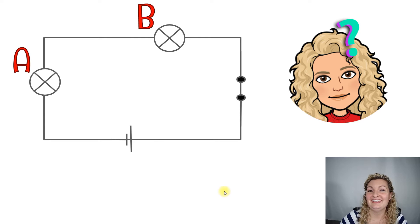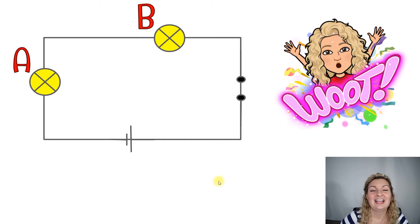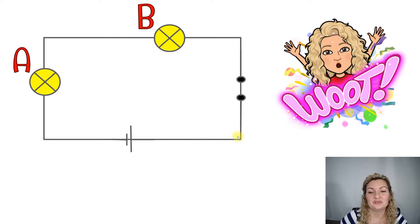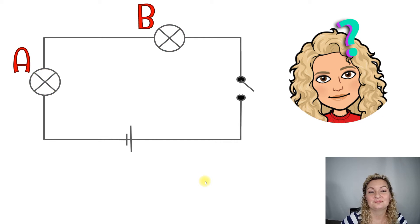Let's look at our answer. So they were both going to be lighting up. This is a series circuit, and if you can tell, we have no breaks or gaps in our circuit and our switch is closed. Therefore, current will flow and they will both light up. Let's try another one.